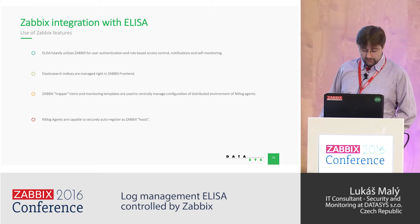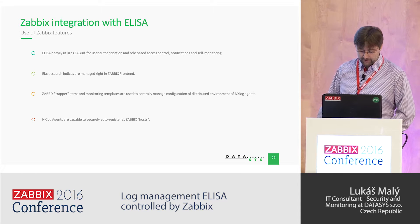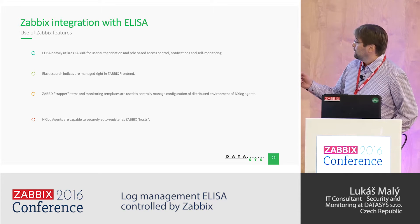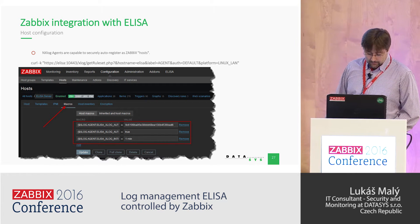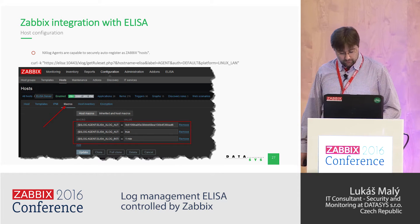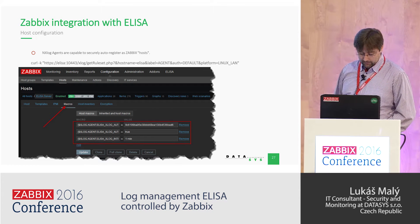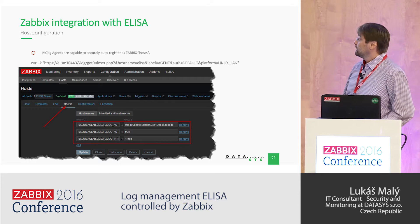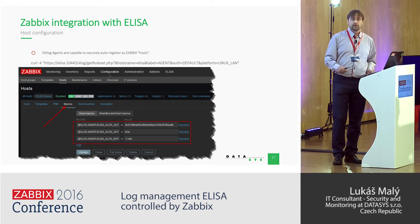NXLog agents are capable of using securely auto-registered Zabbix hosts. In this picture you can see a practical example of auto-registration in Zabbix. After registration, a host macro with an authorization string is created. Every host has this secure string, and this string is used for secure communication between the agent and the ELISA server.